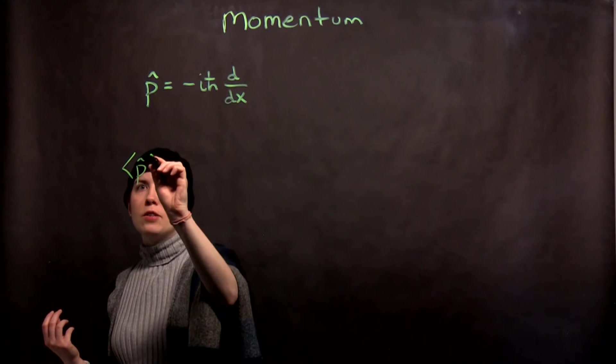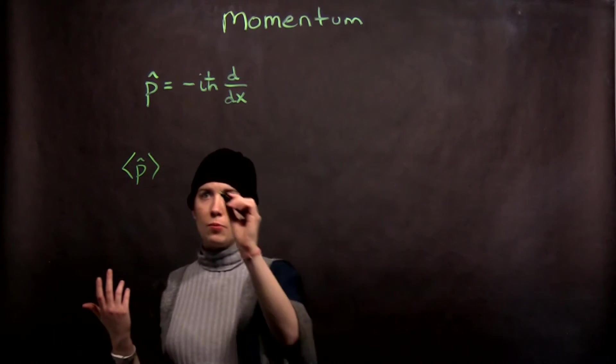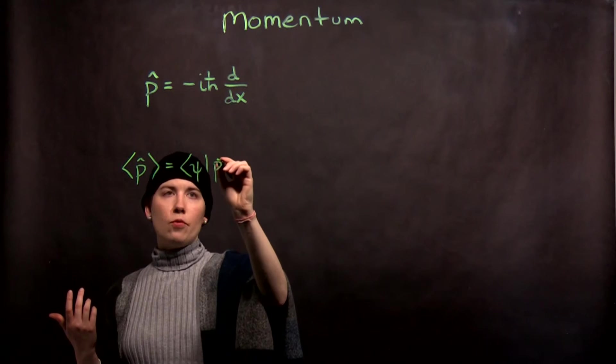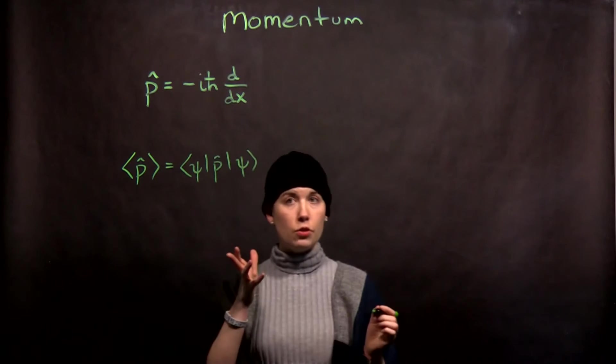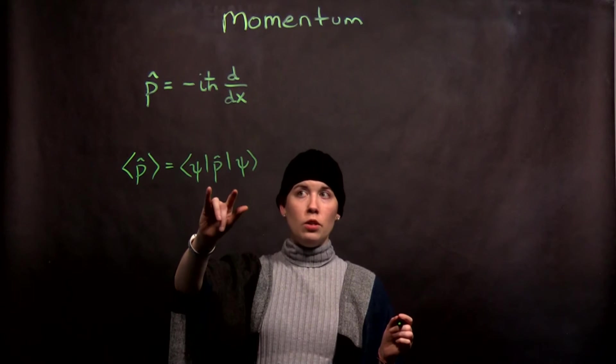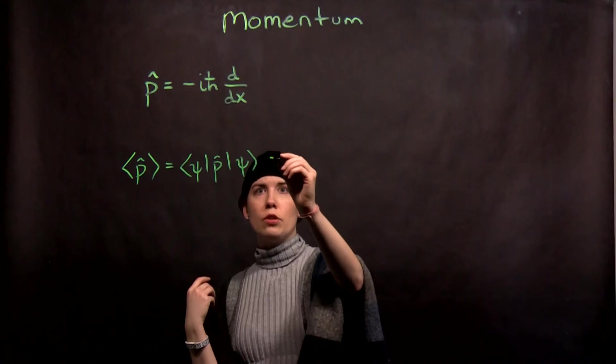So I might want my expectation value of my momentum operator. You always have to have a specific state. And right now we don't necessarily have a specific state, so I'll just write this out initially. So we've said that when you have the expectation value of an operator in the position basis, that's going to become your integral.